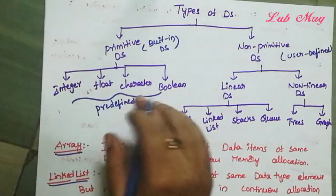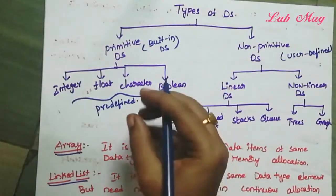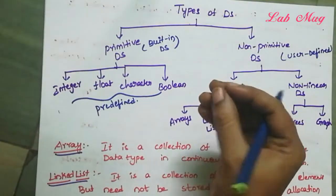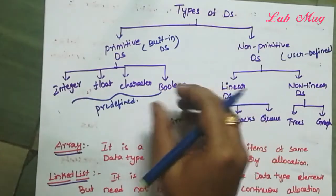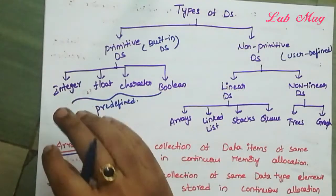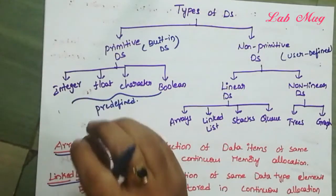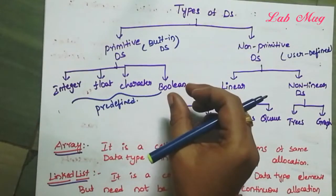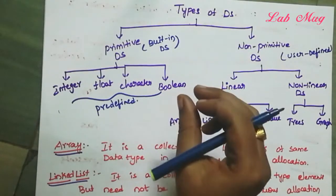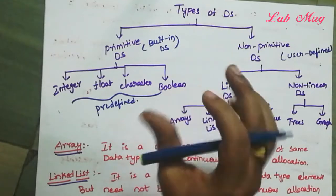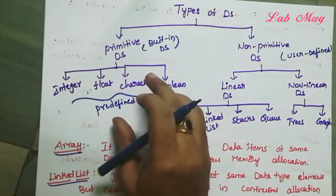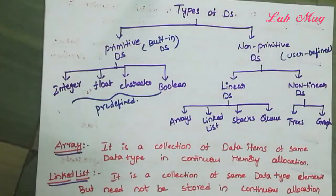What is Integer, Float, Character, Boolean? We can define a variable — for example, an integer variable stores only integer data. If we store a variable as boolean, we can only access true and false. So, based on the predefined data types, we can store the variables.